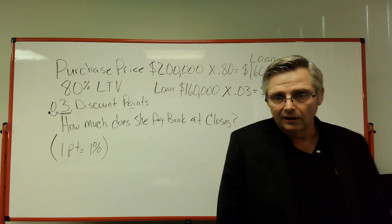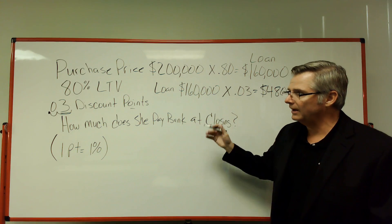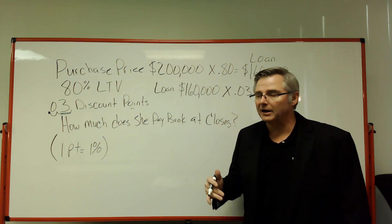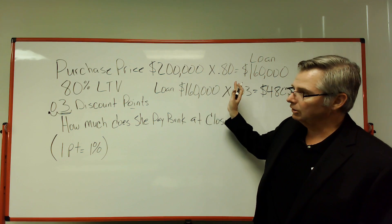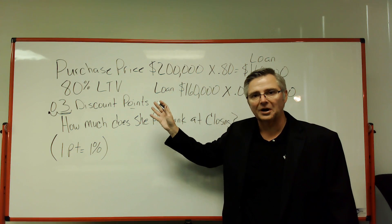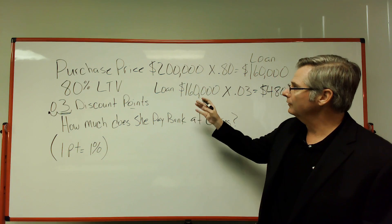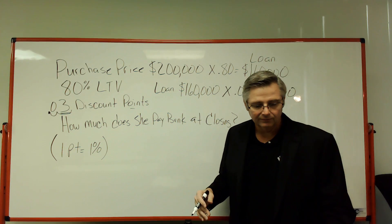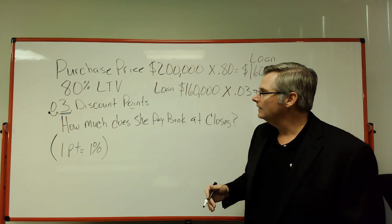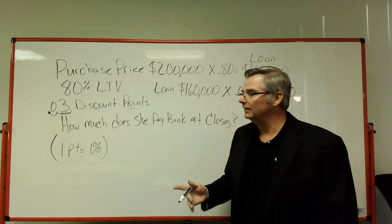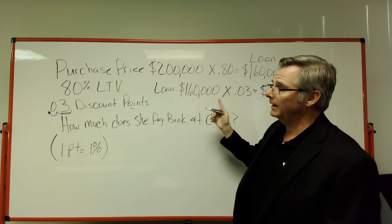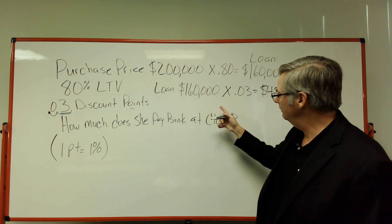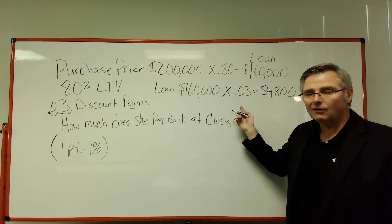That's the cost of the points — that's how that question works. Make sure you get the loan amount and do NOT use the purchase price. Chances are they'll throw that in the answer choices to distract you — if you multiply the purchase price times the discount points, that wrong answer is probably listed. Loan amount times the points: each point equals one percent, so three points equals three percent.